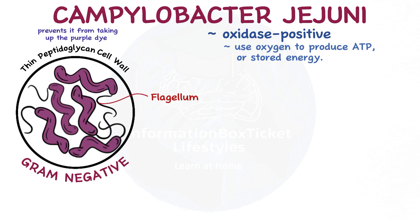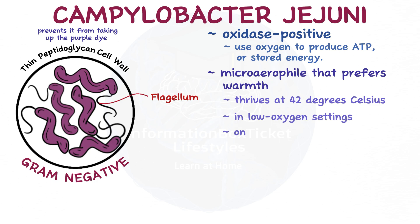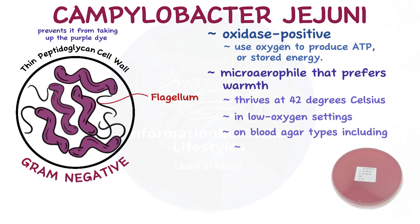Last but not least, because Campylobacter jejuni is a micro-aerophile that prefers warmth, it thrives best at 42 degrees Celsius in low-oxygen settings on blood agar types, including Skirrow, Butzler, and Campybap.